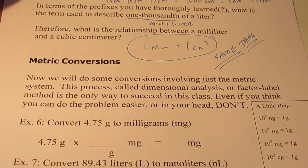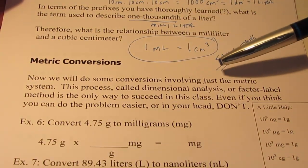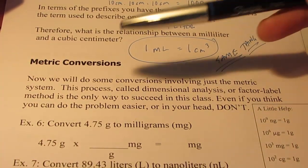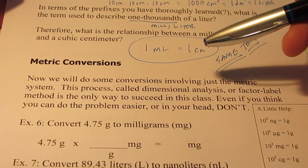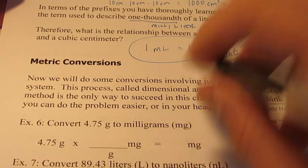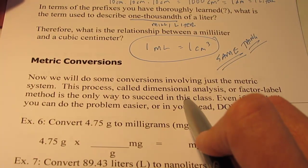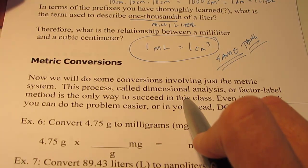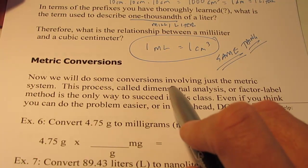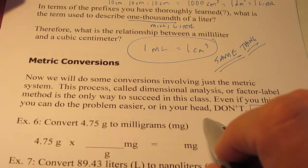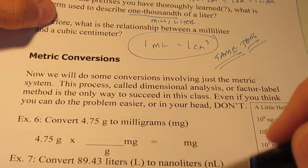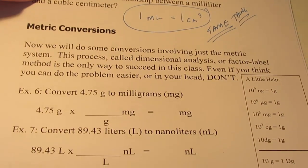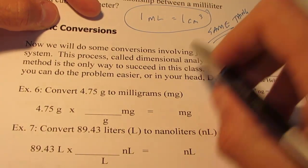Okay, let's talk about some metric conversions. We will do some conversions involving just the metric system. This process we're going to learn today is called dimensional analysis, or the factor label method. It's the only way you're going to succeed in this class. This year you'll probably refer back to this video time and time again to recall how to do dimensional analysis. Even if you think you can do the problem in an easier way or just do it in your head, don't. Resist that temptation. Learn the method with simple problems so that when things become more difficult, you can rely on this method to solve complex problems.